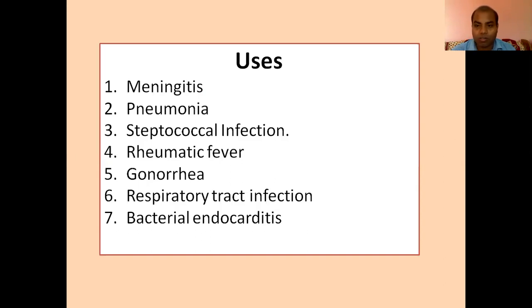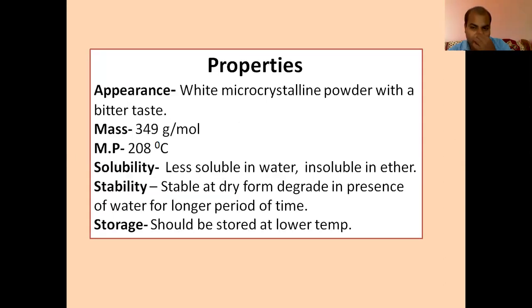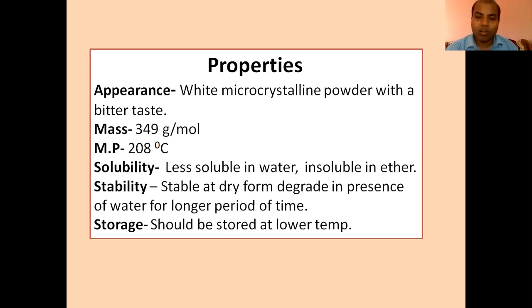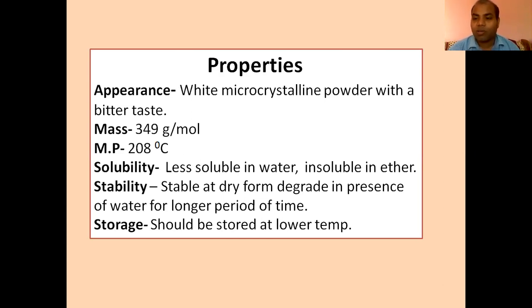In terms of properties, ampicillin is a microcrystalline powder with a bitter taste, having a molecular mass of 349 grams per mole and a melting point of 208 degrees centigrade. In terms of solubility, it is less soluble in water and insoluble in ether, that is insoluble in organic solvents. It is very stable in dry form, and in the presence of water it is also stable. It should be stored at low temperature, avoiding much exposure to heat.